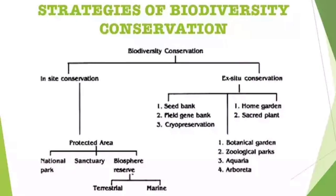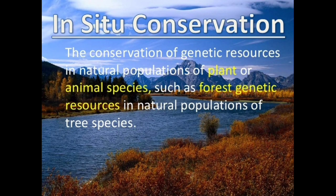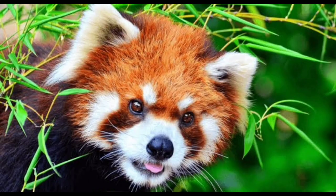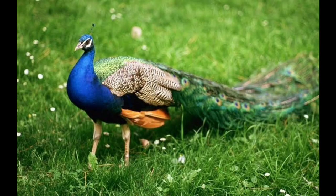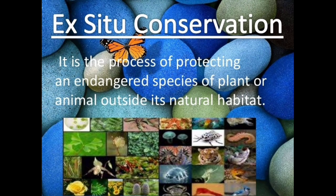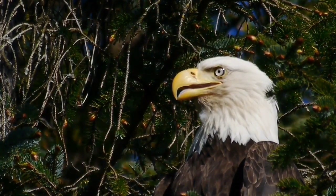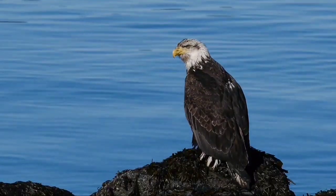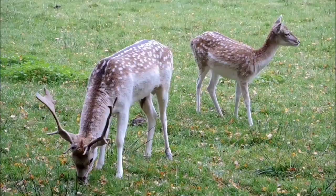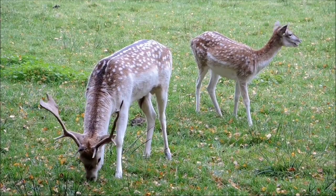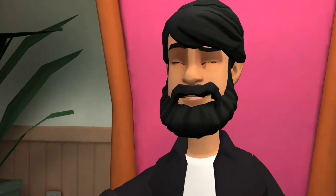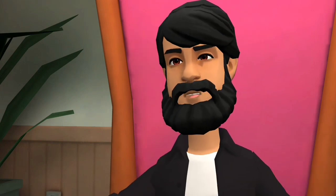Biodiversity can be conserved in the following ways. In situ conservation is the conservation of species within their natural habitat, where the natural ecosystem is maintained and protected. Ex situ conservation involves the breeding and maintenance of endangered species in artificial ecosystems such as zoos, nurseries, botanical gardens, and gene banks, where there is less competition for food, water, and space. I hope you liked our video. If you liked it, please subscribe to our channel and set the bell notification to all for getting future updates.